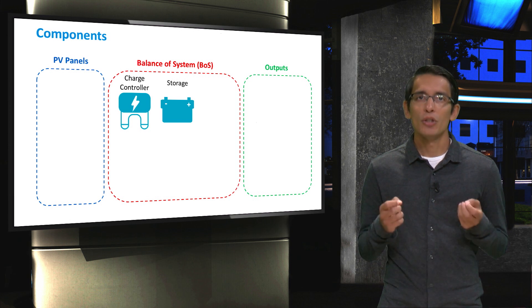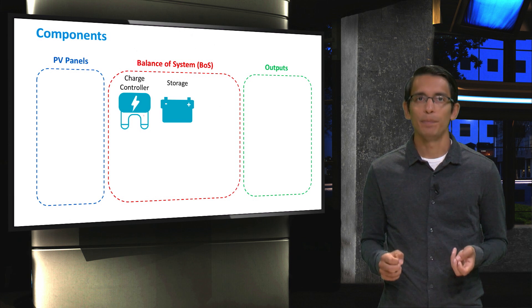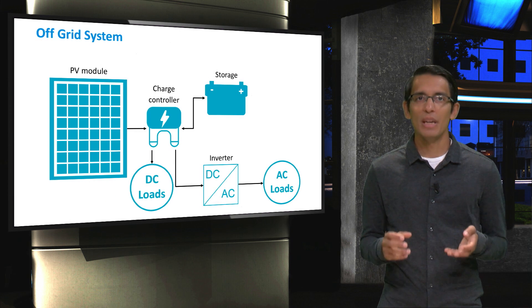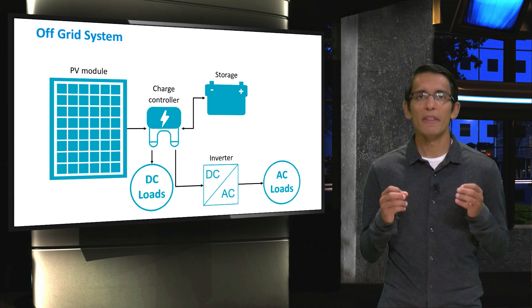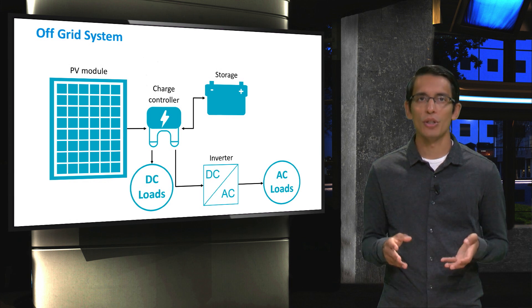Let's look at how a battery and a charge controller are connected in a system. Batteries are typically used in off-grid PV systems. You'll notice that the PV modules are connected to a charge controller. This charge controller then connects to a battery as well as an inverter and DC loads.